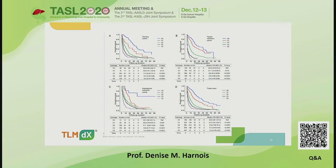They then took this sub-staging system and looked at how these patients might best be managed in terms of treatment, specifically looking at surgery and RFA versus transarterial chemoembolization versus systemic therapy. It's important to understand that the systemic therapy utilized in these patients was sorafenib, and other studies would be needed to look at some of the newer agents now being utilized in the management of hepatocellular cancer patients.